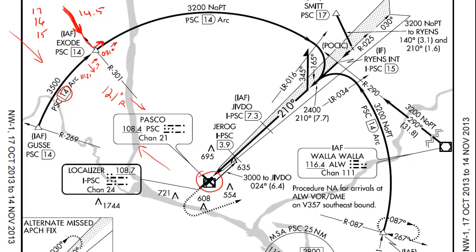The next step is to center up the CDI needle on your VOR indicator. What that's going to do is give you the new radial that you are on from the VOR. In this case, after we make this 90-degree turn, we've probably drifted a few degrees, so we're no longer on the 301 — we're probably on, let's just say, the 303 degree radial. What that means is now we're no longer 90 degrees to the course to the VOR, so if we just kept flying this way, we'd fly outbound away from the arc and we'd never be able to re-intercept it.